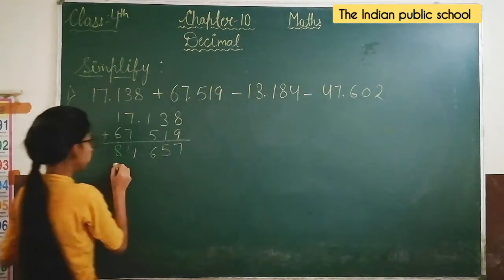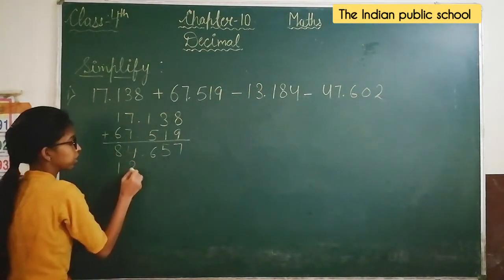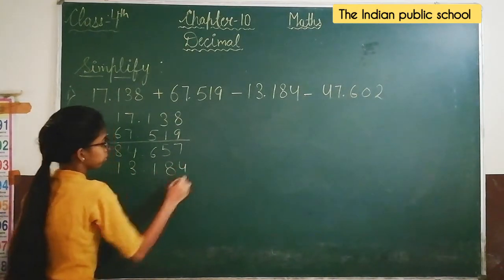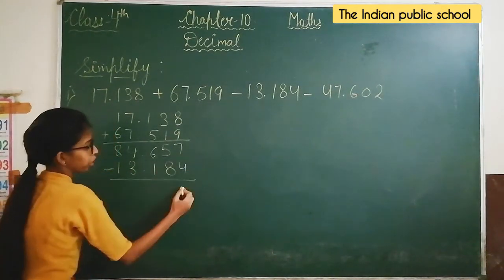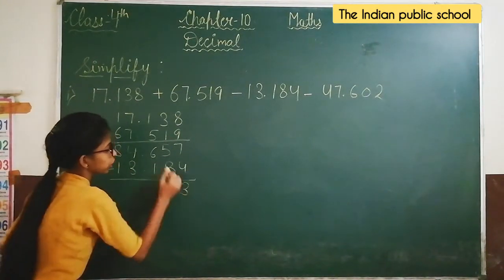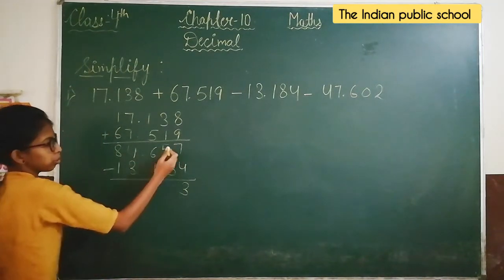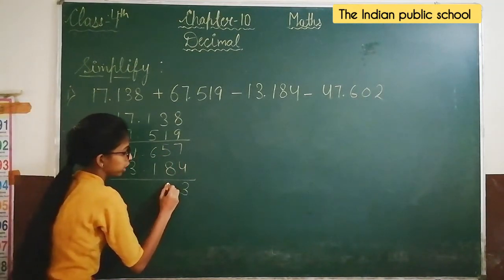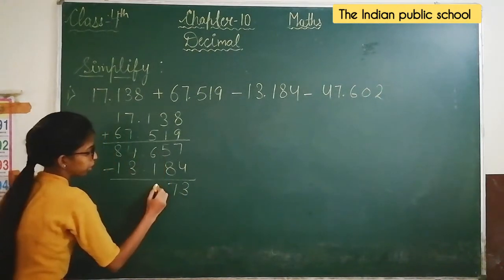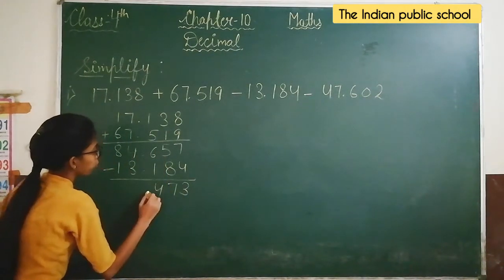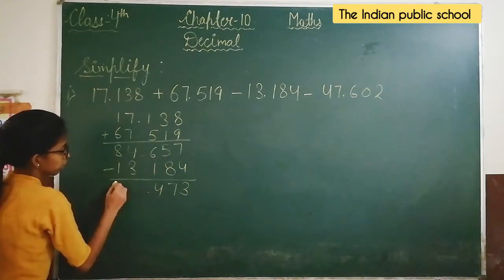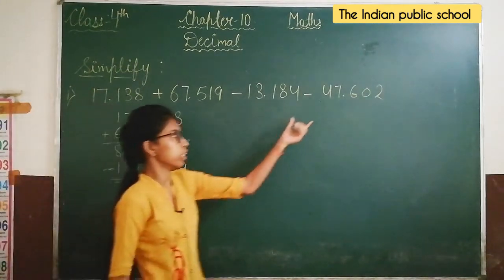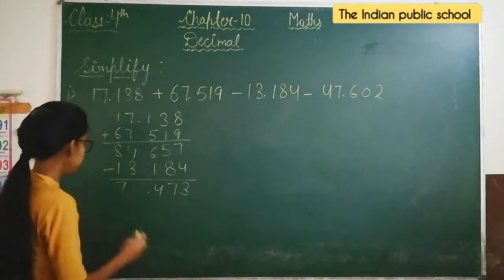The next number is a subtraction. We will subtract the next number by putting them in order. So 7 minus 4 is 3. For 5 minus 8, we cannot subtract, so we will borrow, giving 10 minus 8 is 2. Then 5 minus 4 is 1. 4 minus 3 is 1. The result is noted down.